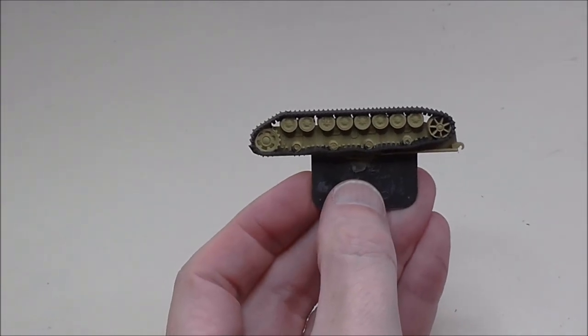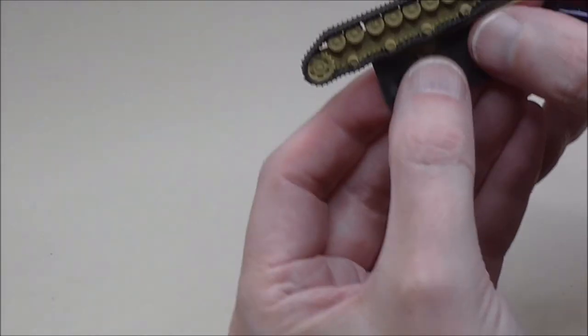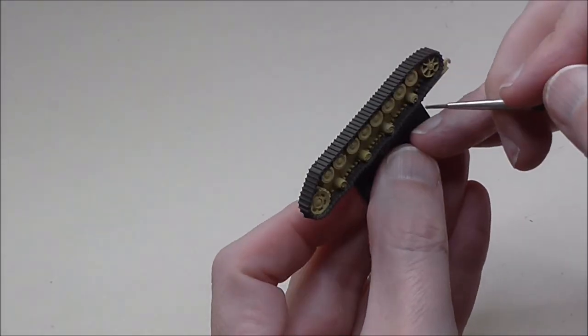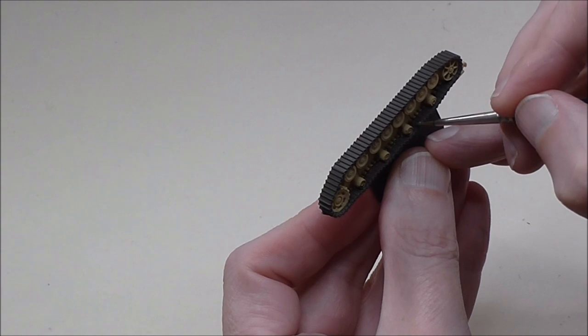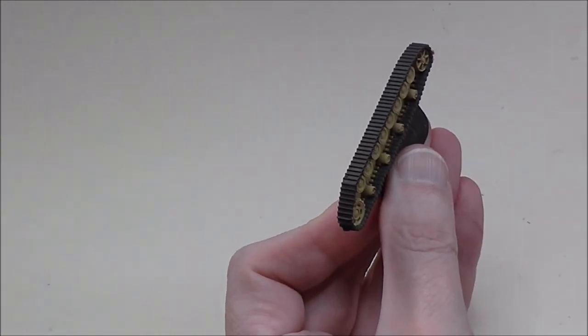I prefer to paint the track separate from the hull. It's not always possible depending on how the tank goes together, but if you can do it that way it's very easy to reattach the tracks when they're finished, and the fact that they're separate helps you avoid a lot of additional tidy-up.